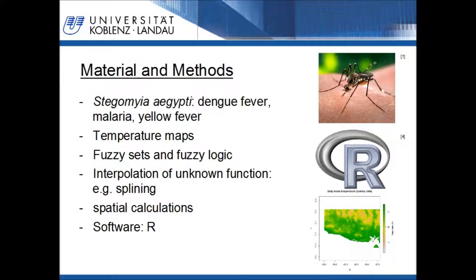As the data used for this method is fuzzy data and we have to calculate the resulting maps with logical expressions, the application of fuzzy sets and fuzzy logic is needed. As demonstrated in the next slides, we have to interpolate a function through given x-y data points. A lot of interpolation methods are available for such tasks. I will demonstrate one called splining, easily implementable in software dealing with geospatial data.